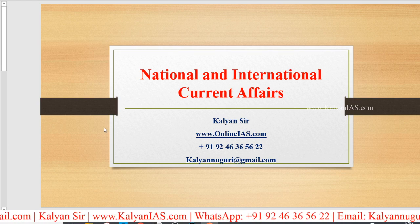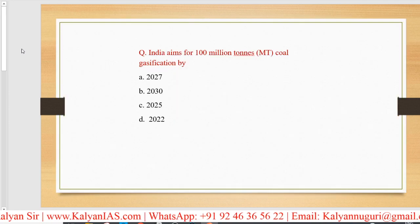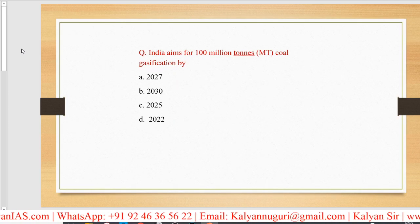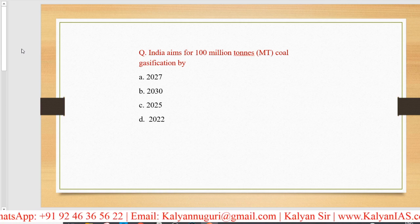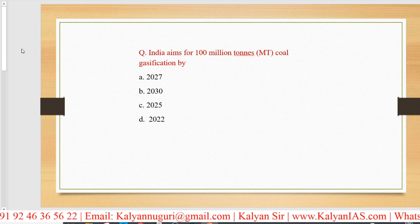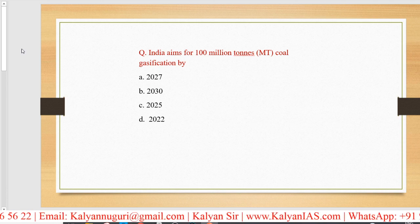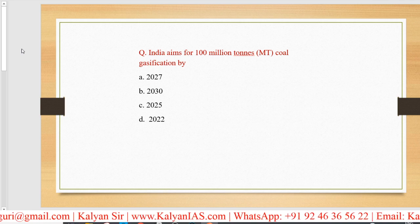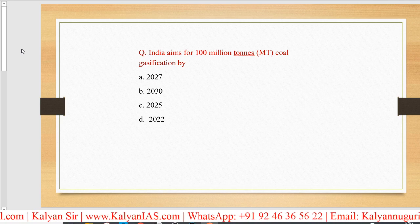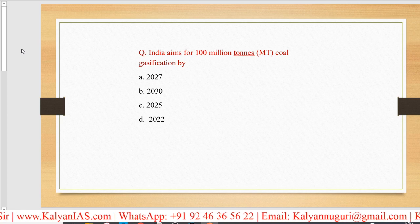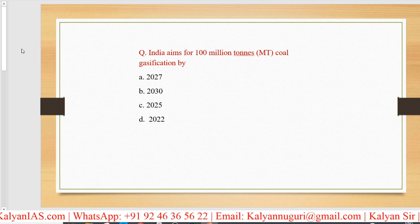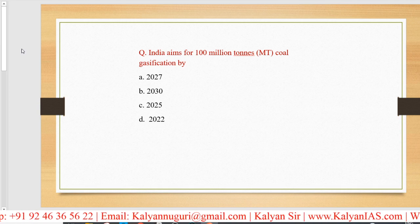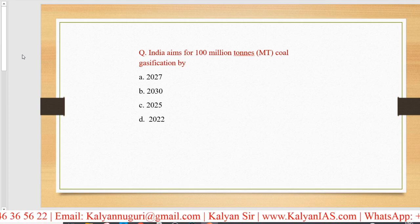This is today's national and international current affairs. India aims for 100 million tons of coal gasification — by the year 2027, 2030, 2025, or 2022? What is India's objective and by which year do we want to achieve this? The answer is option B, that is 2030.